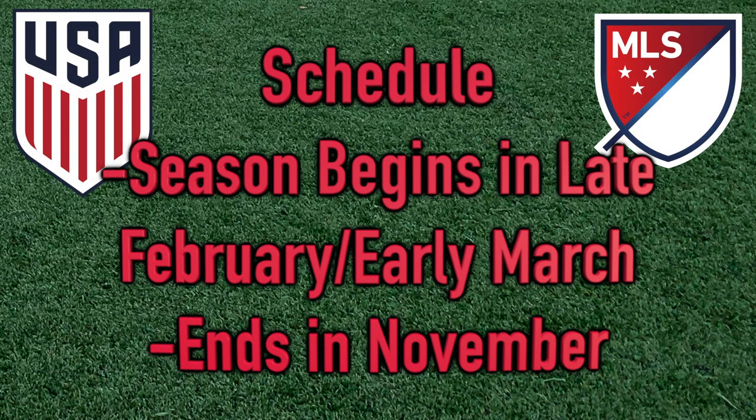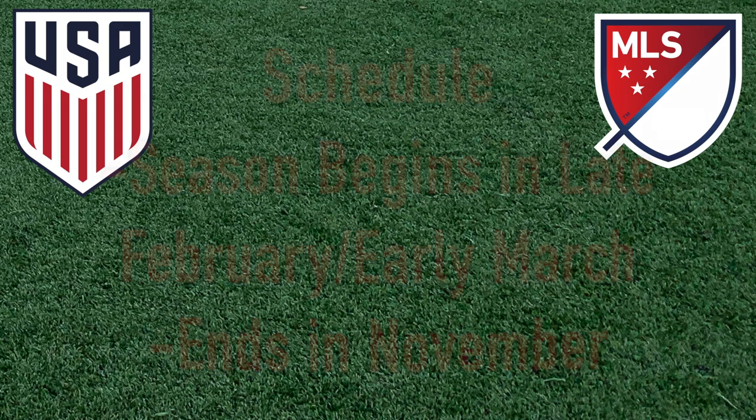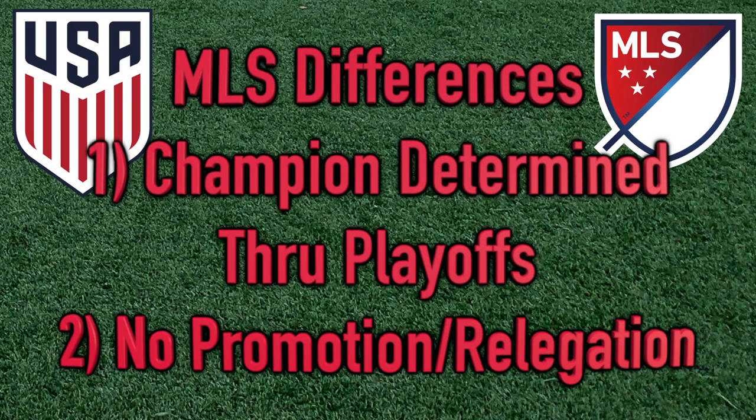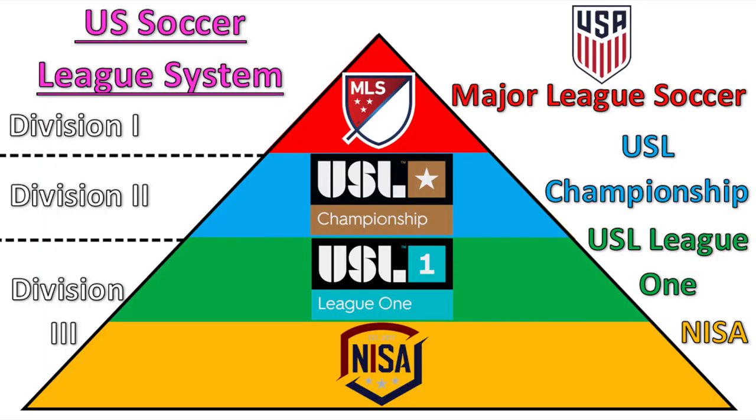The MLS season typically begins in late February or early March and ends in November — contrasting with most other football leagues around the world that run from August to the following May. Two other major differences: number one, a champion is determined through a playoff system rather than just a regular season table; and number two, there's no promotion or relegation system, so teams are not transferred between divisions year to year based on performance. Once a club is in the MLS, it's in there for good.